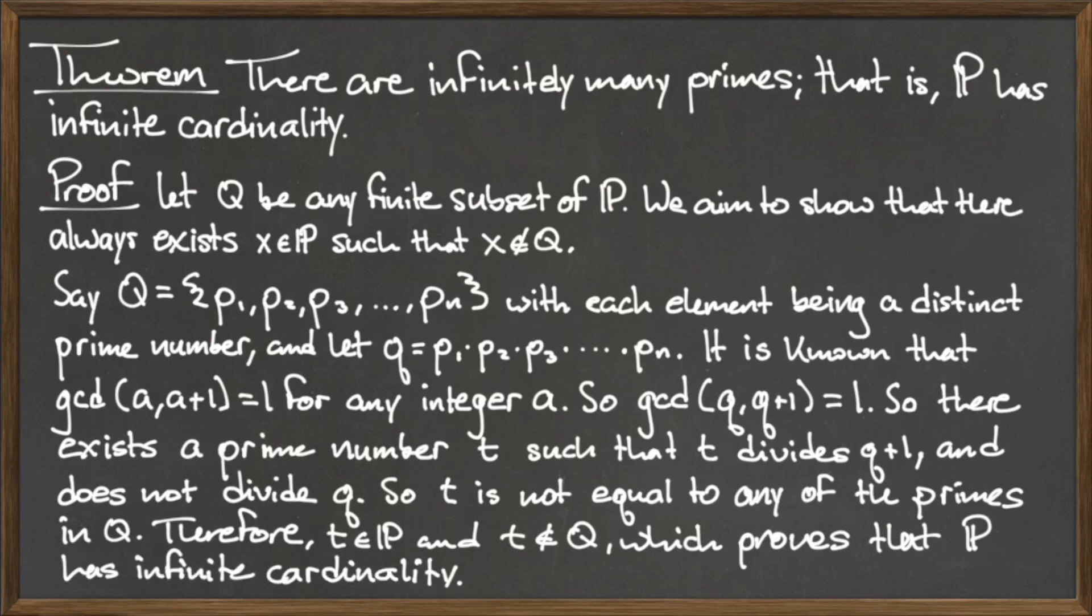Therefore, t is in the set blackboard P, and t is not in Q, which proves that the set blackboard P of the prime numbers is infinite.